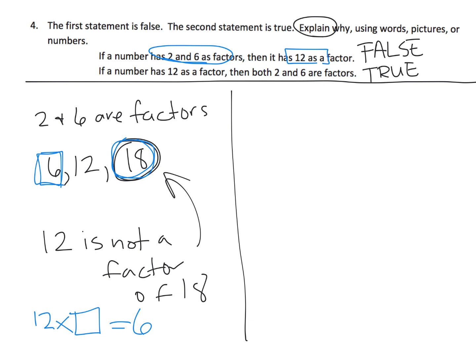Now, if a number has, now let's do that second one. If a number has 12 as a factor, does that mean, automatically, 2 and 6 are factors?